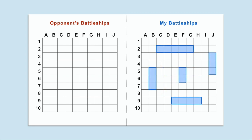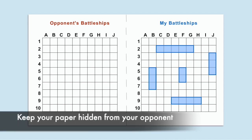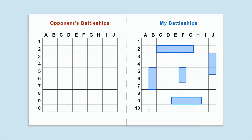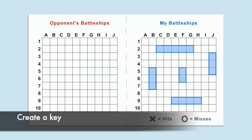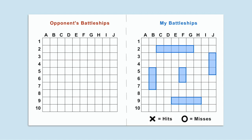After placing their 5 ships on the grid, each player should make sure to keep their grid hidden from their opponent. Finally, players should create a small key on the side of the grid to help them remember the symbols that indicate hits and misses in the game. X's will be hits, and O's will be misses.